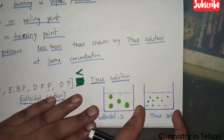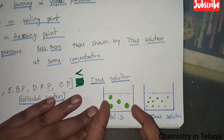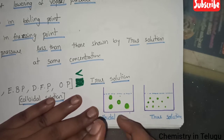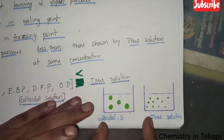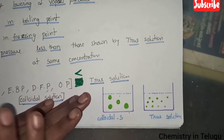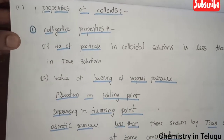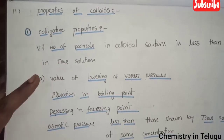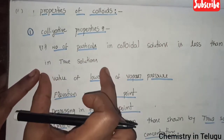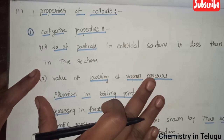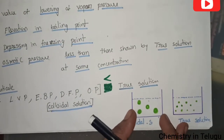We compare the true solution particles. The colloid particle size is bigger, but the number is smaller. The number of particles in colloid solution is less than those in true solution. If you compare the colloid solution, the number of particles is less.